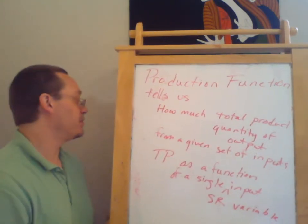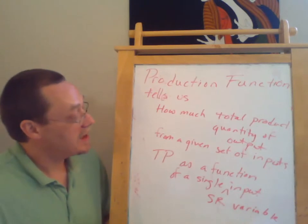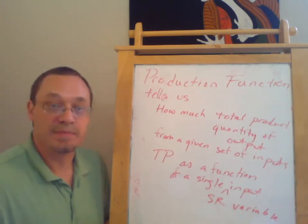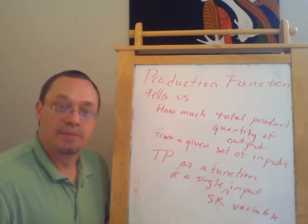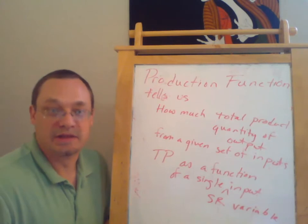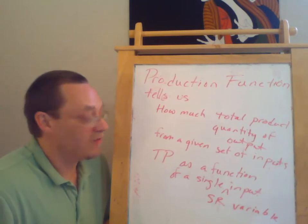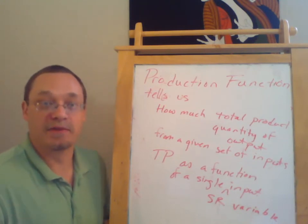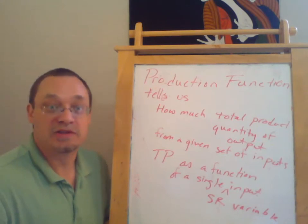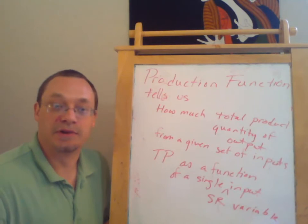The variable input would be something like the number of production workers. And what we're doing here is we're going to keep constant, hold equal the other inputs that we have. So we're going to use an example of a farm here in a second. And we're going to assume, say for instance, that the number of acres of land or the amount of equipment or animals or whatever that the farm has to work with stays the same because those are relatively hard to adjust.